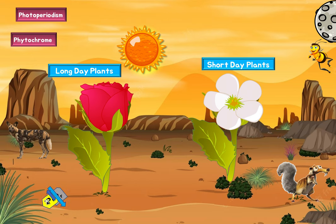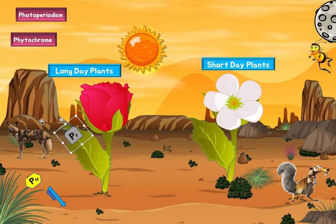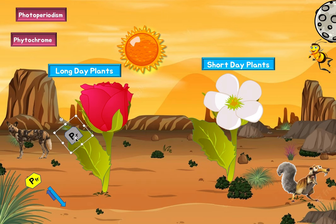So we start off with this pigment — this phytochrome. It's a little molecule inside the leaf. We call it PR — P for phytochrome, R because it absorbs red light. The sun emits rays; we know it emits UV light, but it also emits visible light, and visible light contains red light. So this phytochrome can absorb red light, and red light exists when the sun is out.